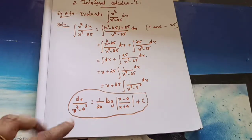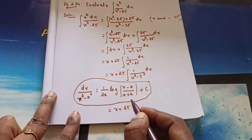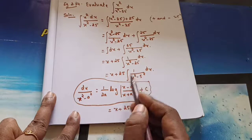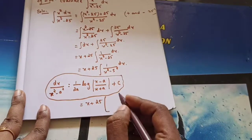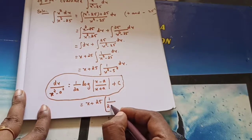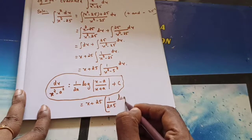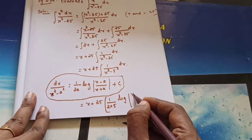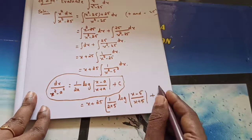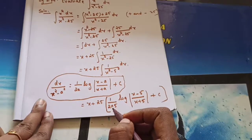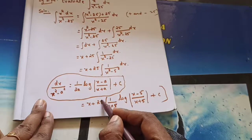We will use this formula here. That is equal to x plus 25 into 1/(2 times 5) times log|(x minus 5)/(x plus 5)| plus C. So this 5 and 25/5 — you can cancel the 5s. So 25 divided by (2×5) gives 5/2.